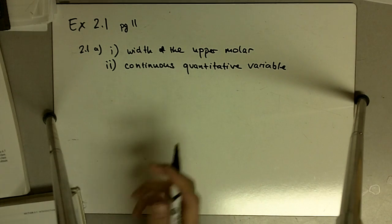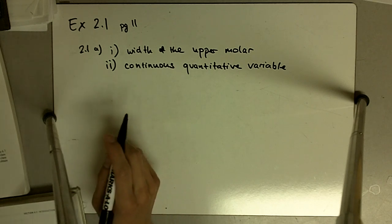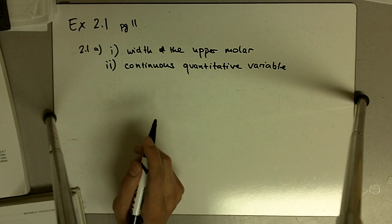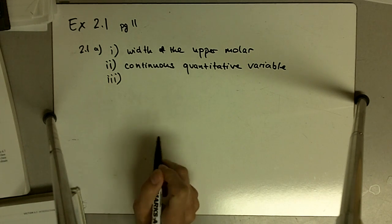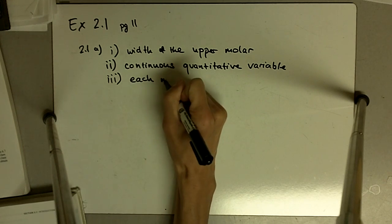It's going to be measured in millimeters and it can take on anything from 12.5 millimeters to 12.3 millimeters, anything like that. The observational unit is each molar that is measured.